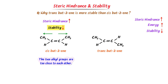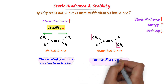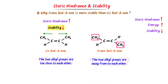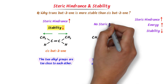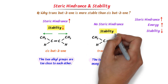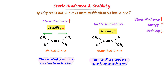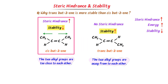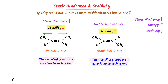On the other hand, in trans-but-2-ene, the distance between the two alkyl groups is more than the van der Waals radius, so there is no steric hindrance possible in it. We know that if there is no steric hindrance, the molecule is highly stable. Therefore, we say that trans-but-2-ene is more stable than cis-but-2-ene. It is because there is no steric hindrance in trans-but-2-ene while there is more steric hindrance in cis-but-2-ene. Note down this important concept.